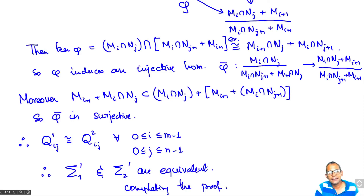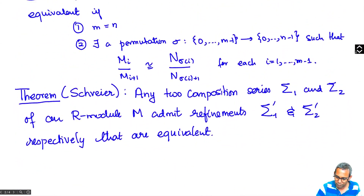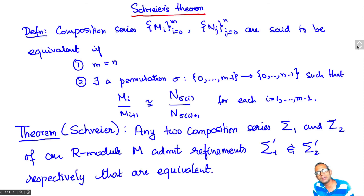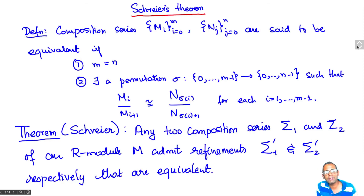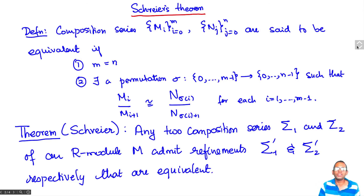Let me emphasize again that in Schreier's theorem there is no hypothesis. When we prove the Jordan-Hölder theorem, we will need a hypothesis about the ring R or the modules. This is a completely general theorem. So even for a ring like Z, which can admit infinite composition series, any two finite composition series will admit equivalent refinements. Moreover, the proof we've given actually shows you how to construct this common refinement explicitly.